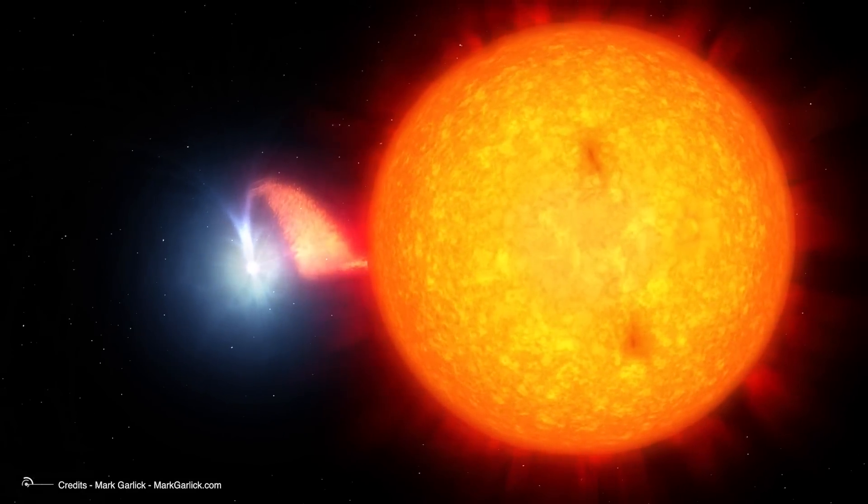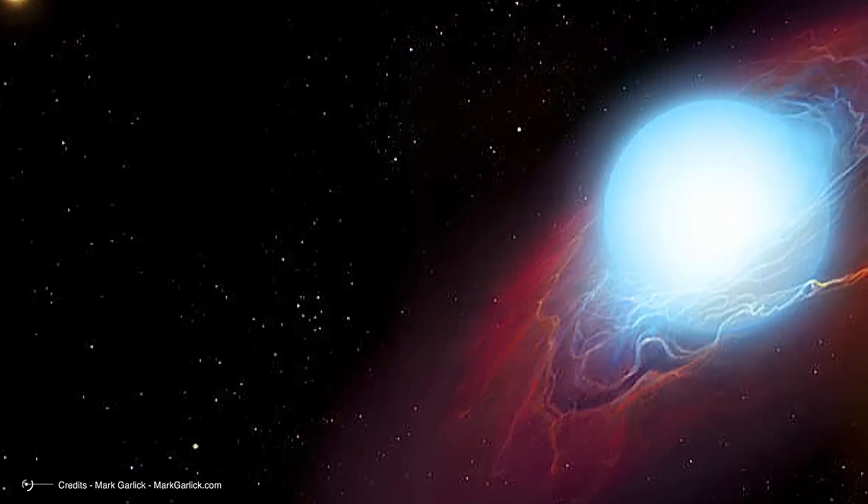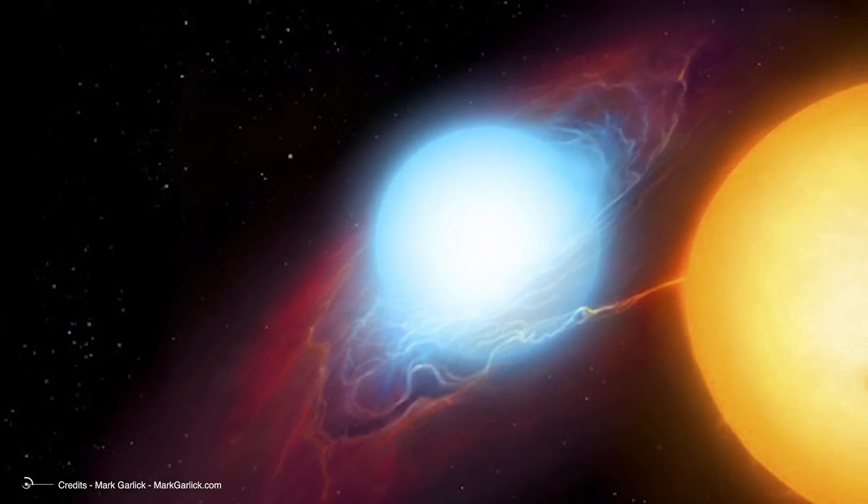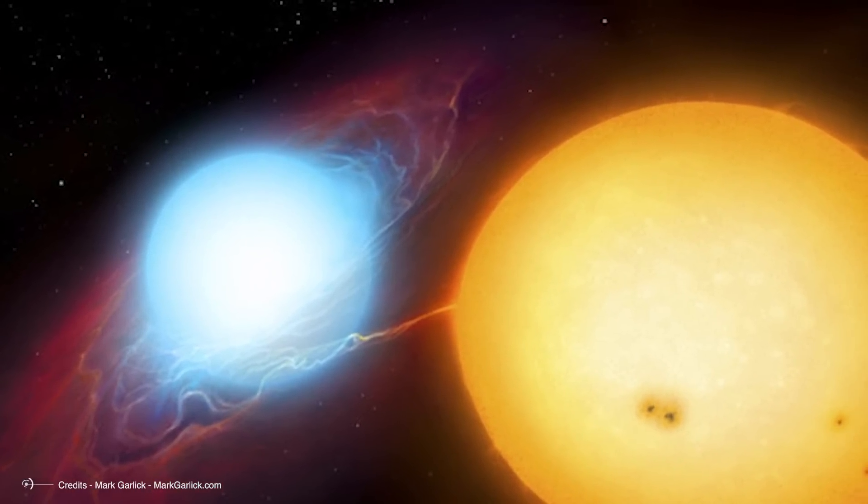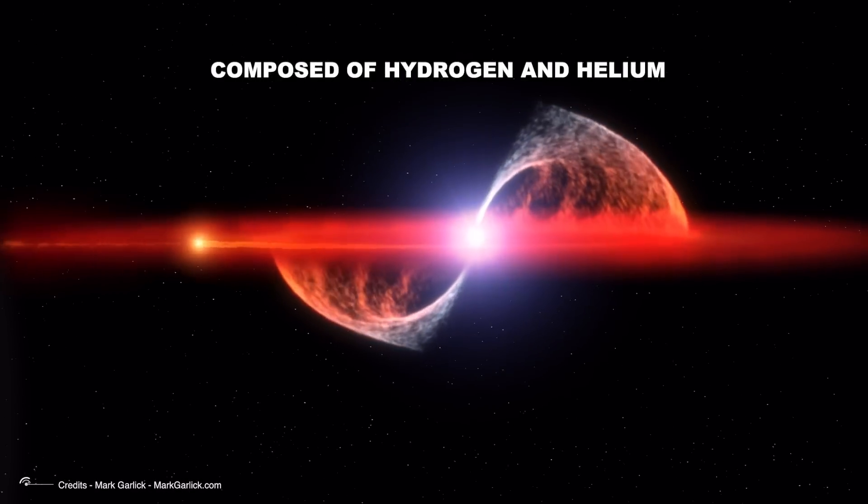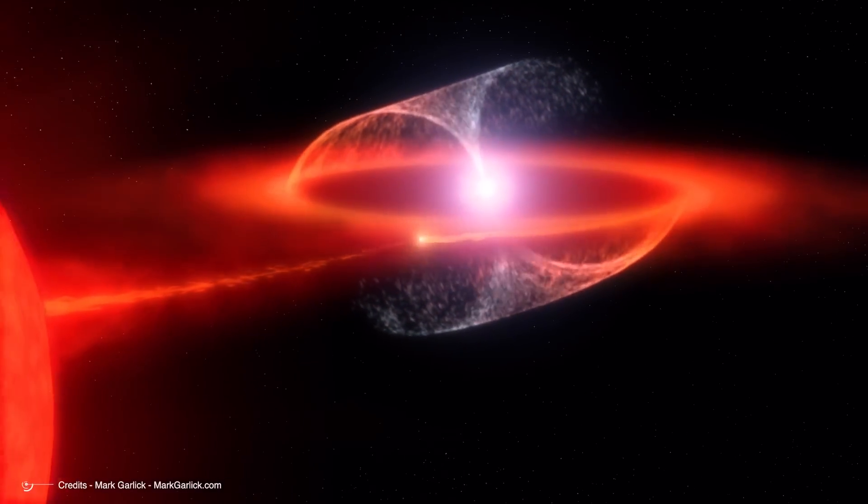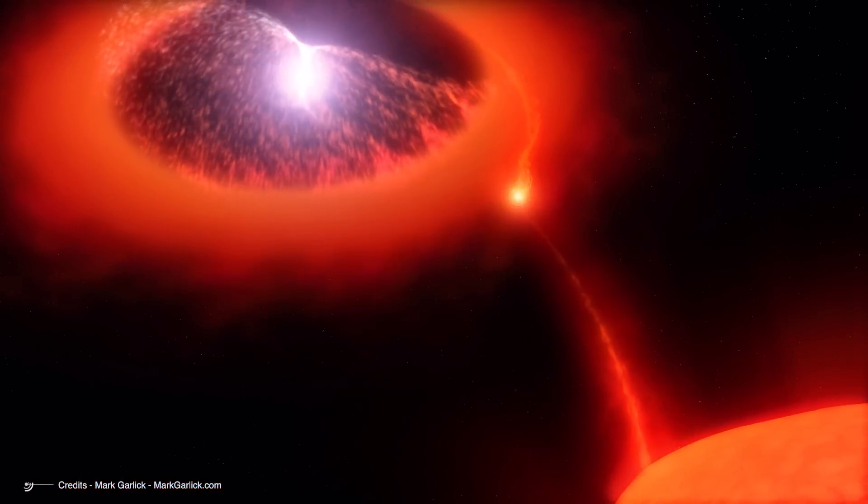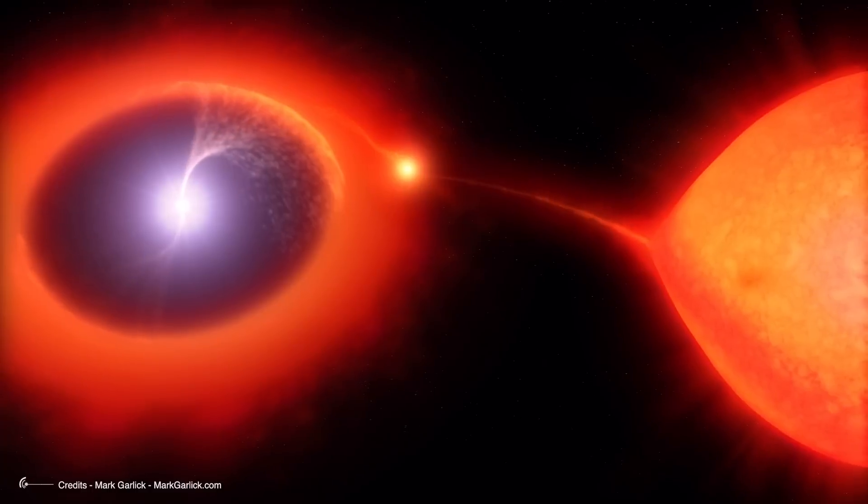The red giant loses gas from its outer layers at a rate of about a million billion billion kilograms per year. The gases spiral onto the surface of the white dwarf, where they are compressed and heated to extremely high temperatures by the star's gravity. This material forms an accretion disk that spirals towards the white dwarf's surface. The stripped material, composed of hydrogen and helium, envelops the white dwarf, creating a dense and hot atmosphere around the stellar remnant. The feeding continues until a critical mass is reached, at which point nuclear fusion reactions can reignite, this time only on the star's surface and not in the core, leading to a great and sudden increase in the star's brightness.